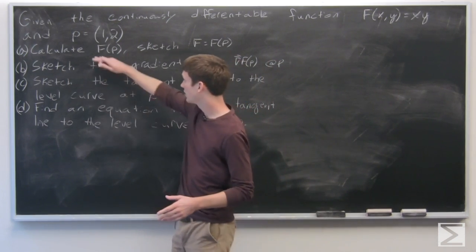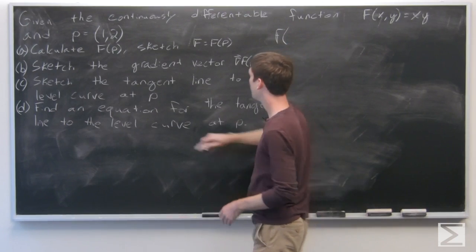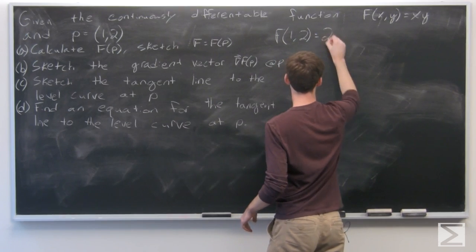Okay, so first let's calculate f(p). p is (1,2), so f(1,2) is equal to 2.